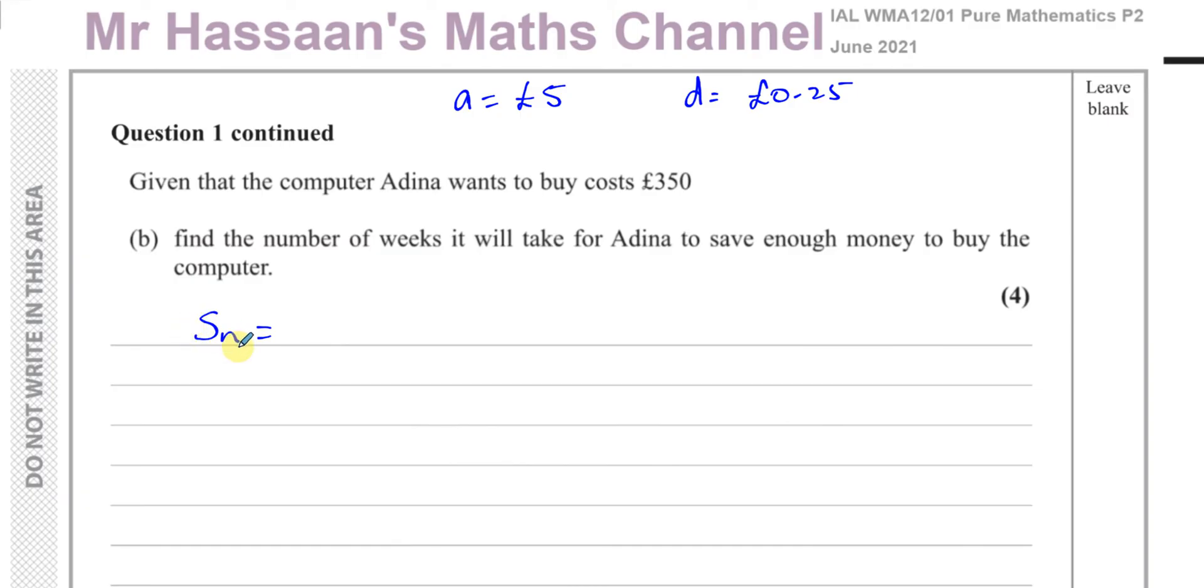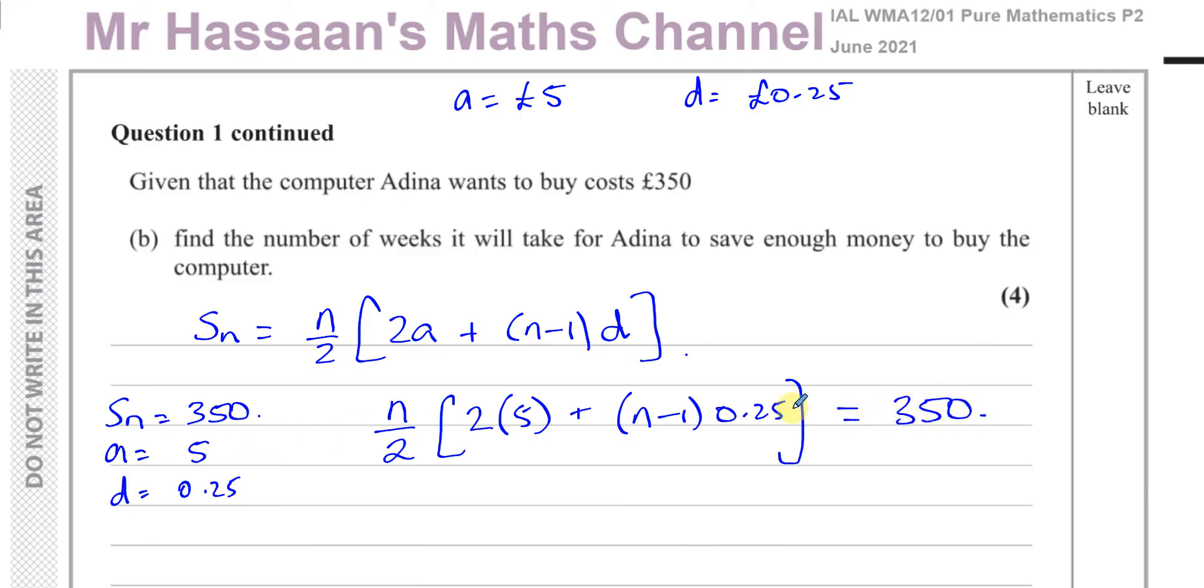We've got to think of the formula for the sum of all the terms up to a particular term. The sum of the nth term of an arithmetic series is Sn equals n over 2 times 2a plus n minus 1 times d. This is given in the formula book. We have to find the number of weeks for this sum to equal 350. So Sn equals 350 pounds. We know the first term is 5 pounds and the common difference is 0.25 pounds. If we substitute these values in, we can find what n is. So n over 2 times 2 times 5 plus n minus 1 times 0.25 equals 350.